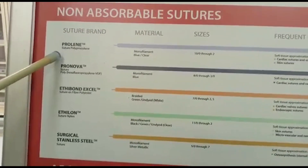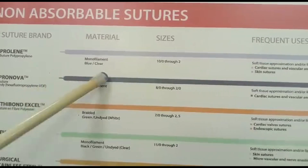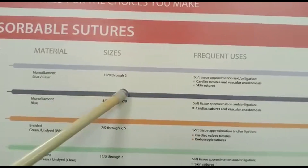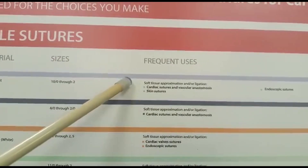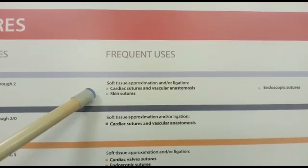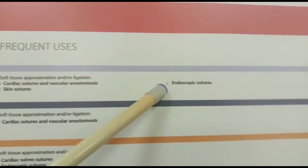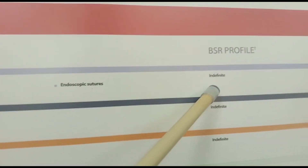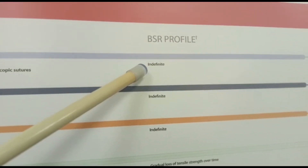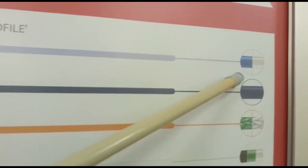Prolene sutures are non-absorbable and come in different colors — blue and clear — and different sizes from 10-0 through 2. These sutures are used in soft tissues, especially in cardiovascular surgeries, as skin sutures, and as endoscopic sutures. The BSR profile — meaning the strength of the suture — is indefinite.